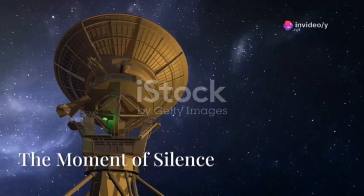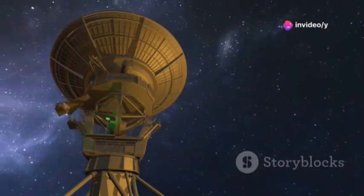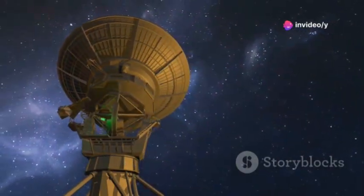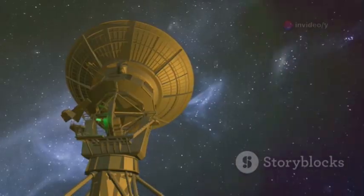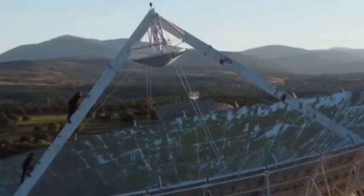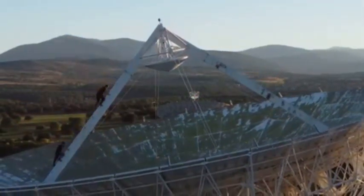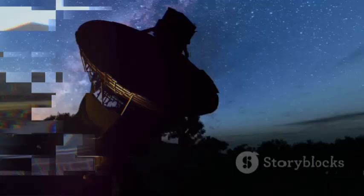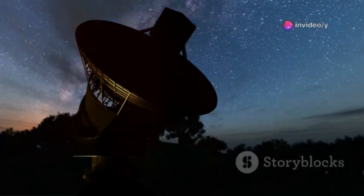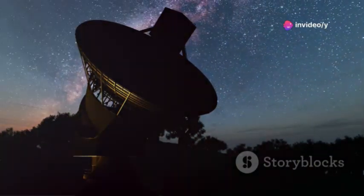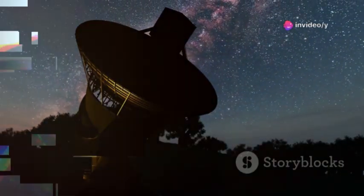Imagine listening for a whisper from 12 billion miles away. The signal from Voyager 2 is incredibly faint, so weak that only NASA's deep space network can hear it. As Voyager 2 journeyed farther, only one station in Canberra, Australia could communicate with it. This single antenna became Voyager 2's only connection to Earth, a fragile link across an unimaginable void.